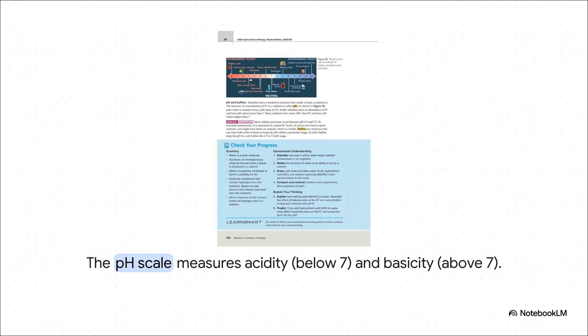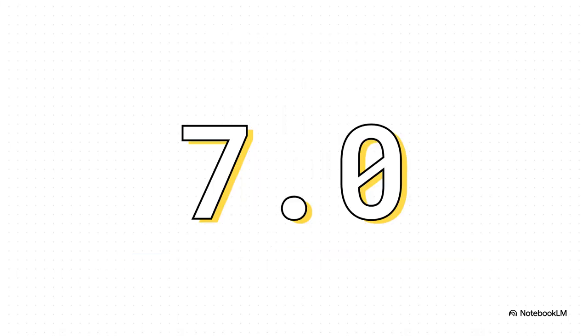And we measure all this using the pH scale. It runs from 0 to 14. Anything below 7 is acidic. We're talking lemon juice or stomach acid. Anything above 7 is basic or alkaline, like baking soda or soap. The lower the number, the more acidic. The higher, the more basic. And what's sitting right there, dead in the center? A perfect 7.0. That's pure water. It is the ultimate neutral, the perfect balance point for all of chemistry.